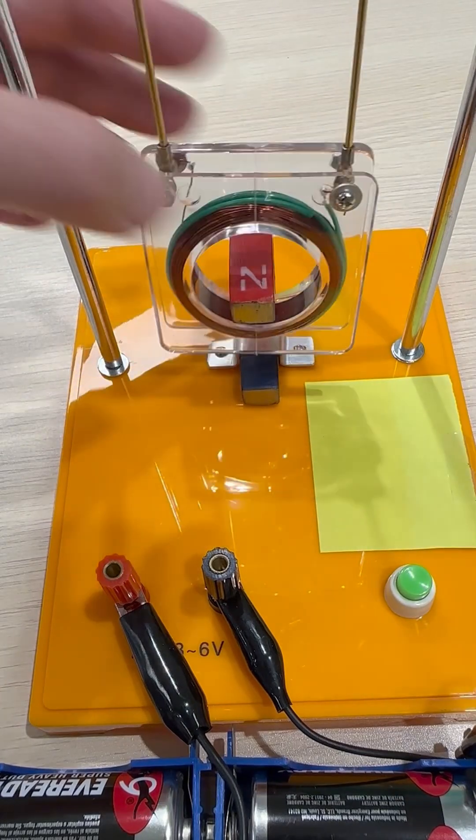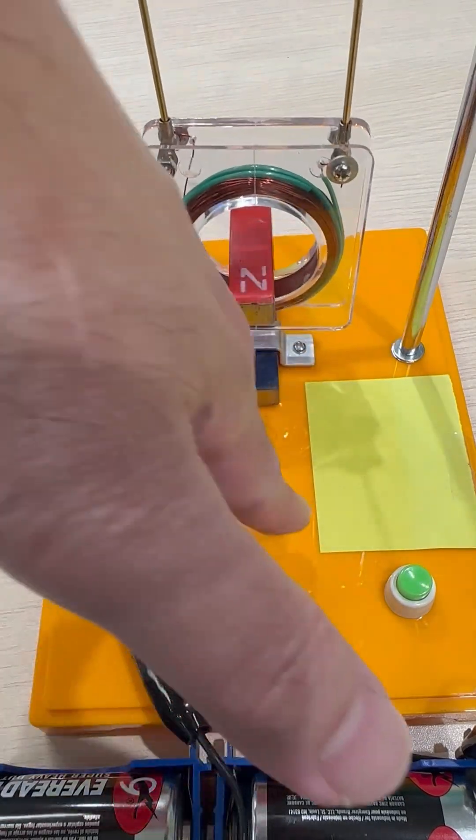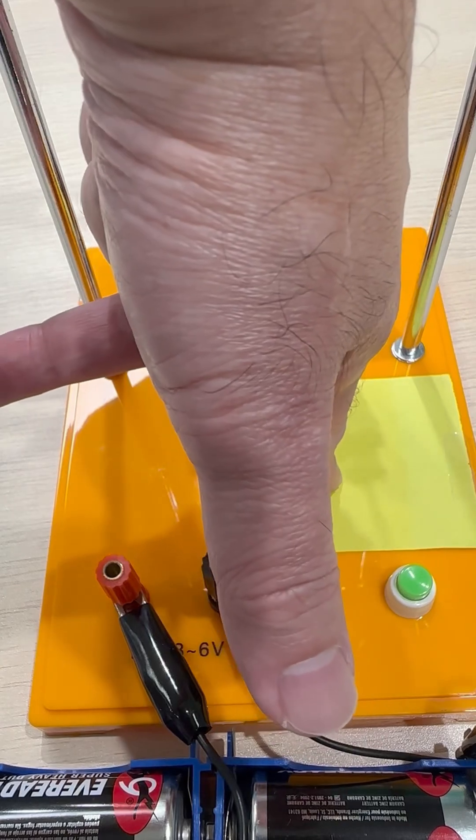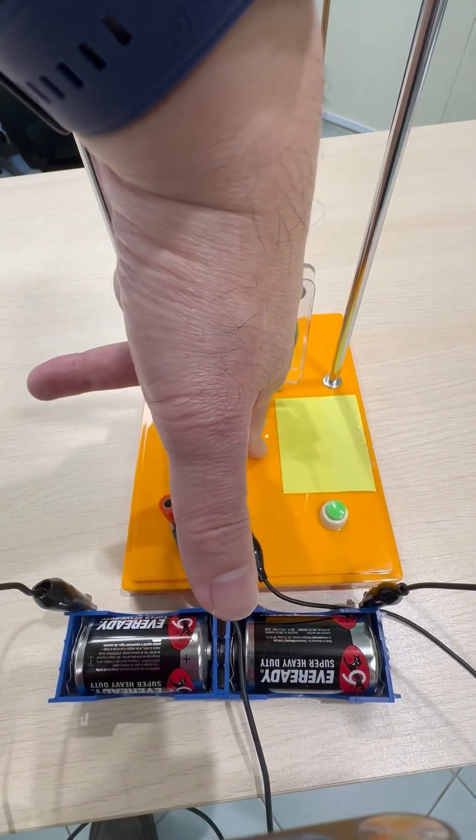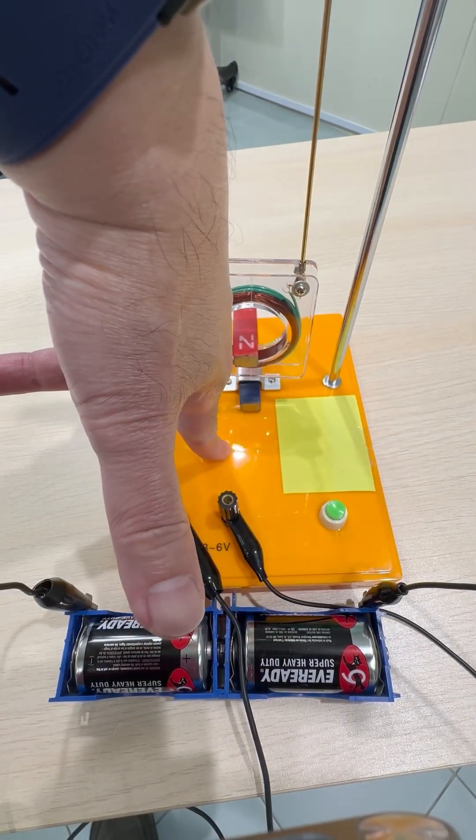So as we have said, north to south, index finger downwards, current to the left, middle finger to the left, and the force is towards us.